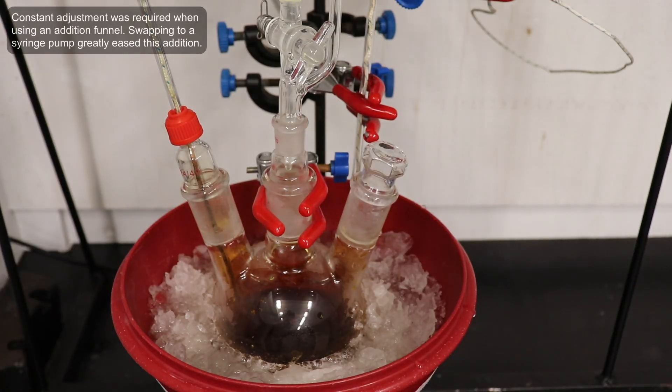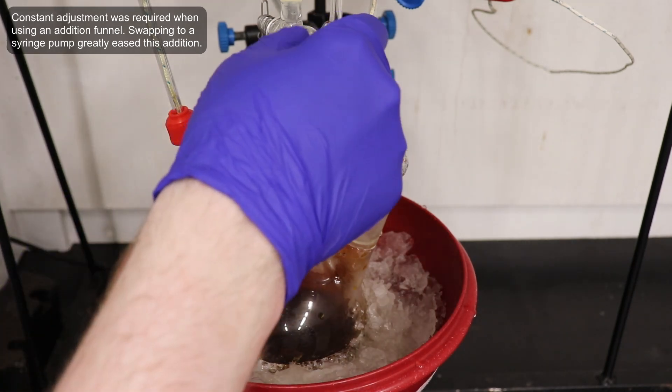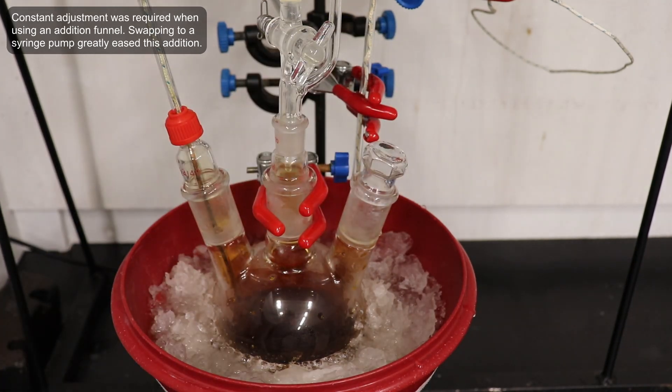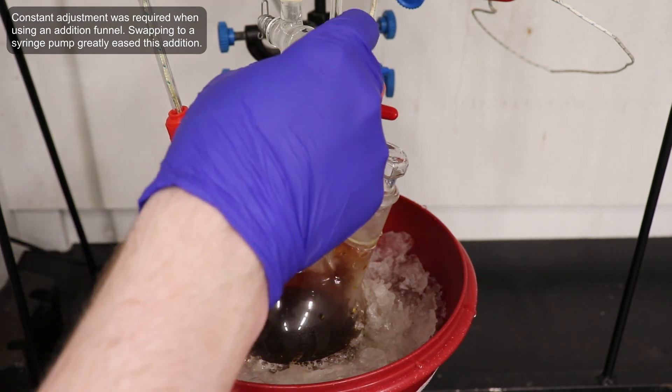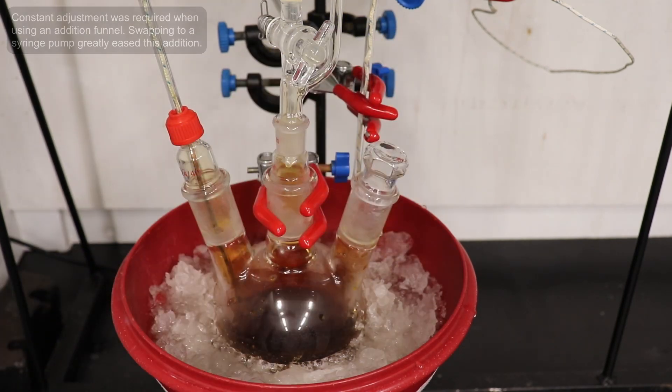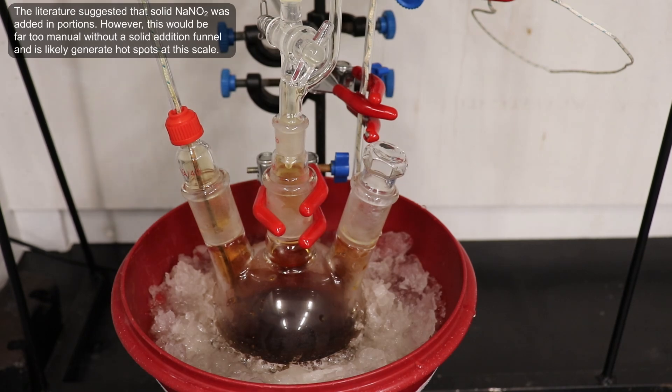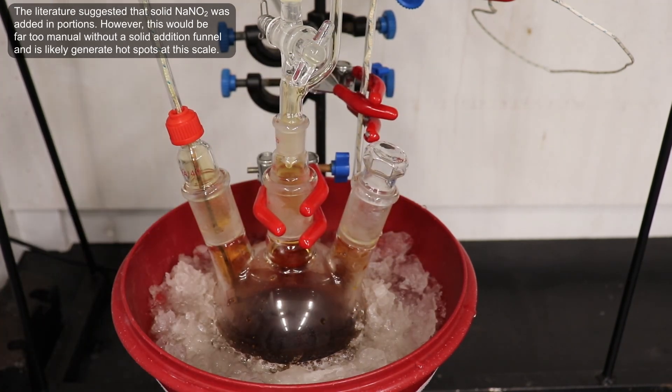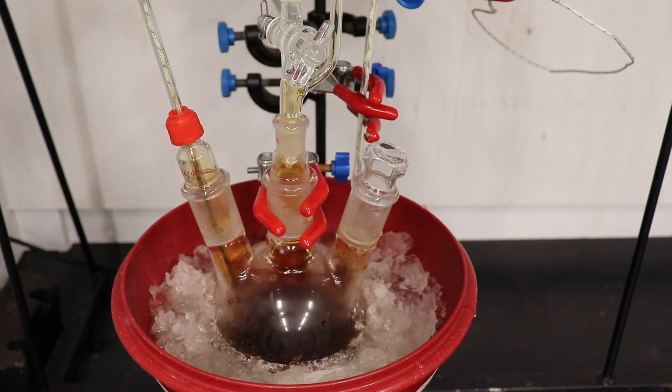I have previously attempted this reaction using various pressure-equalized addition funnels, however, the high surface tension of the nitrite solution prevents the establishment of a constant, slow drip rate, and every few minutes the dripping would stop, requiring readjustment of the stopcock. Although, it still is entirely possible to use an addition funnel for this reaction.